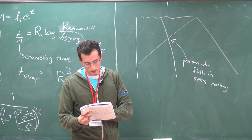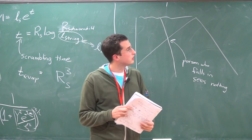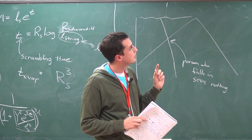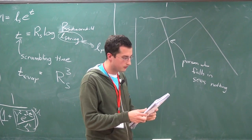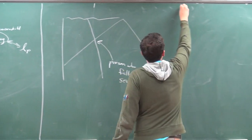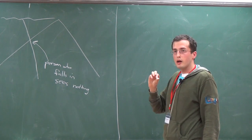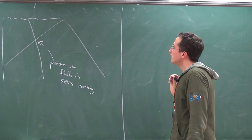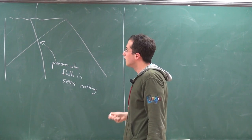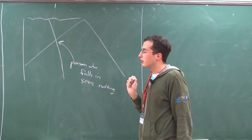I'll give some examples of that. We'll come back to complementarity in a second. So let's go back to the point of view of the outside observer. The next thing we should talk about is Hawking radiation. Last time we found that Hawking radiation, as computed by Hawking, comes out to be exactly thermal.